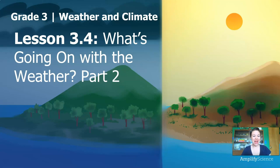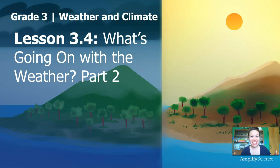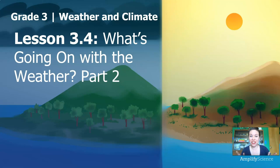Hi, welcome back. I'm Scientist Kate. This is grade three, weather and climate, lesson 3.4 — What's going on with the weather? Part two. What's the weather like where you are today? Here in Seattle it's sunny and warm — I even have my door open right now, so you may hear some birds chirping or maybe even a lawnmower during this lesson. For this part of the lesson you won't need any materials from home. Just follow along with me. Are you ready to do some science? Let's go.